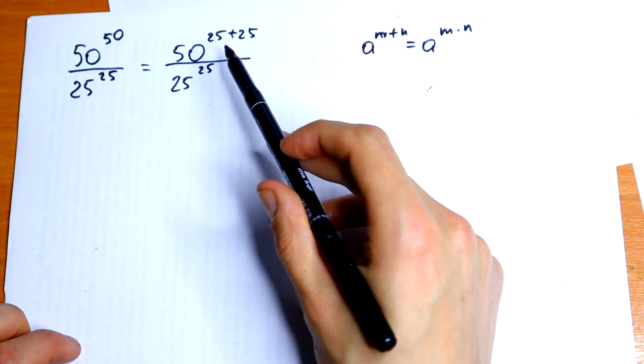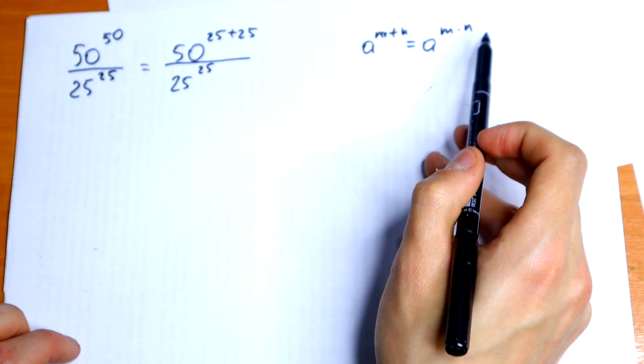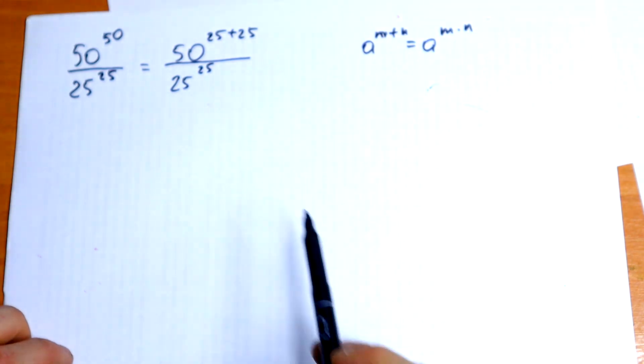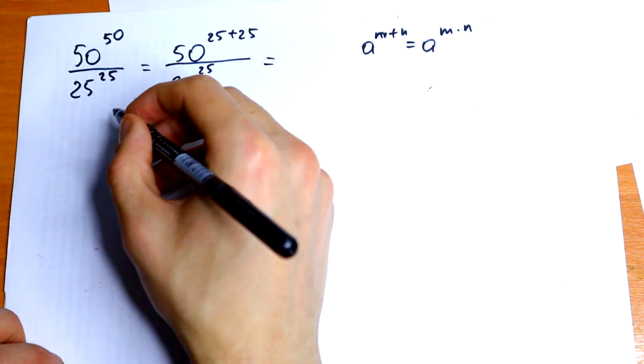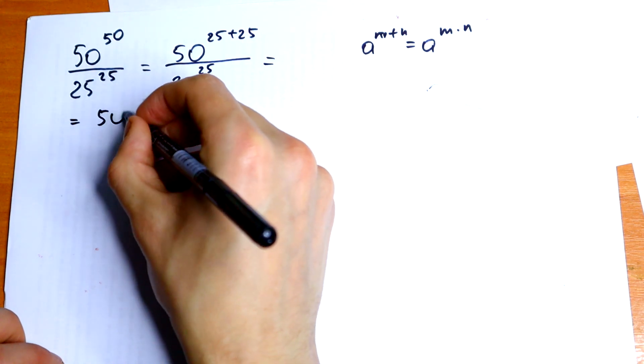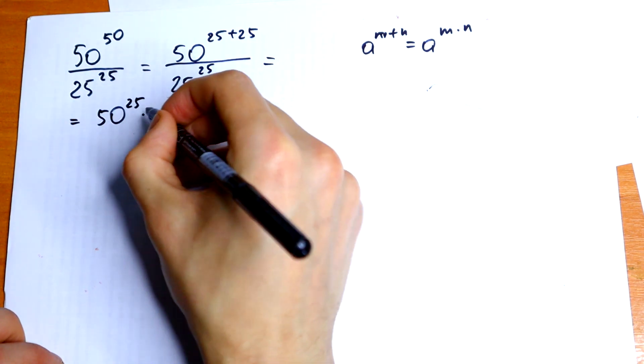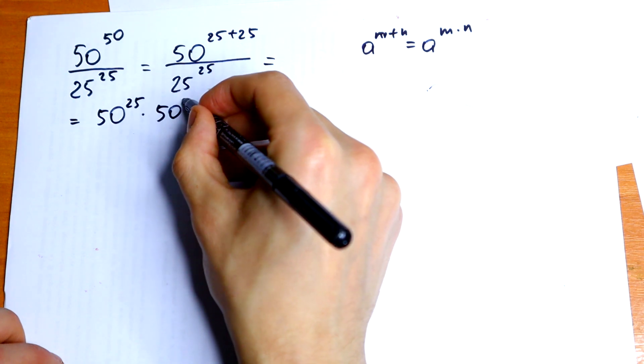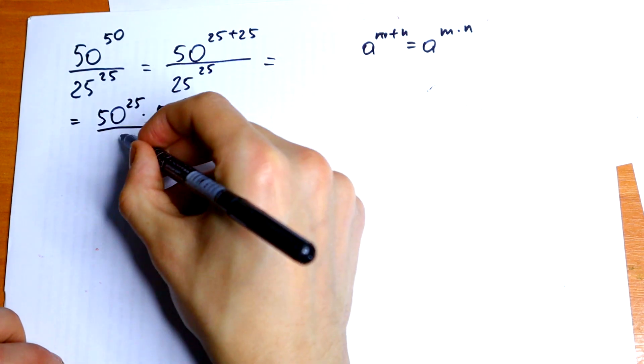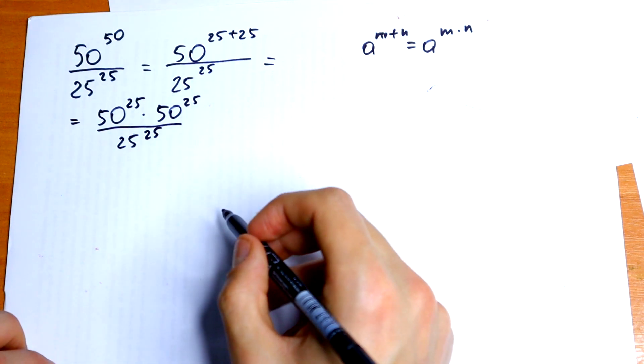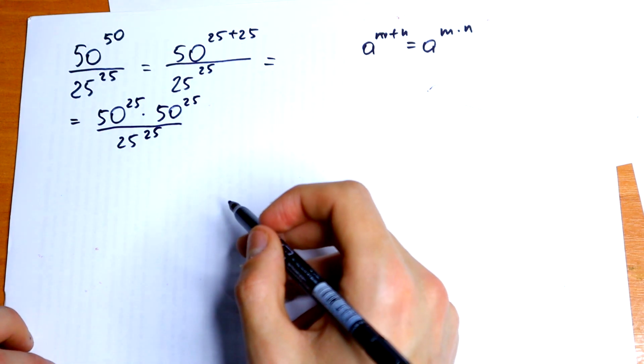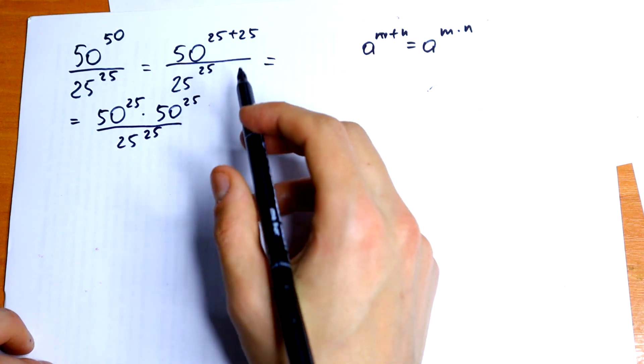Right here we have a sum, so we can break these as a product. Let's do this. It will be equal to 50 to the 25th power times 50 to the 25th power all over 25 to the 25th power. Nothing hard, just using this rule and break this exponent.